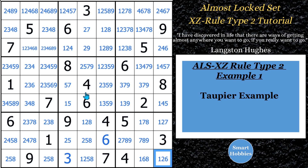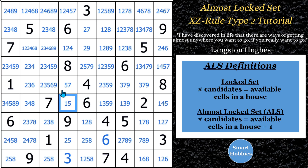For my first example, I wanted to use what I call the Topier example. If you Google Almost Lock Sets and you're looking for a website, this Topier one will pop up — T-A-U-P-I-E-R. The first example actually talks about an Almost Lock Set. Remember, an Almost Lock Set is where you have N cells and an additional candidate — so for two cells, you'd have three candidates, N plus one.